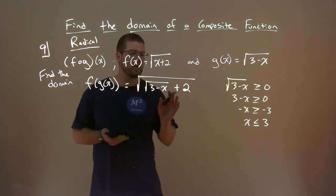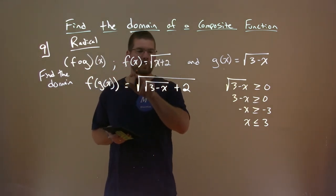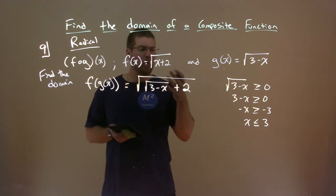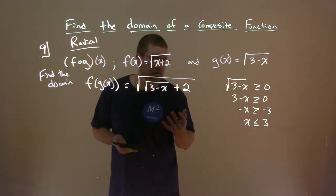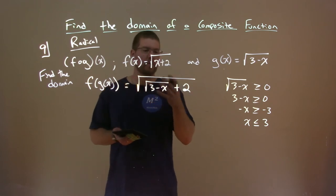So x has to be less than or equal to 3, okay? But notice this part now. The other thing we have to worry about is the whole radical here. The whole radical. The big part. Well, that whole big part has to be greater than or equal to 0, what's inside of it, right? We can't do the square root of a negative number.